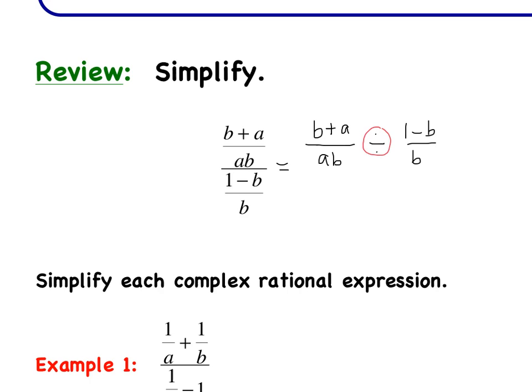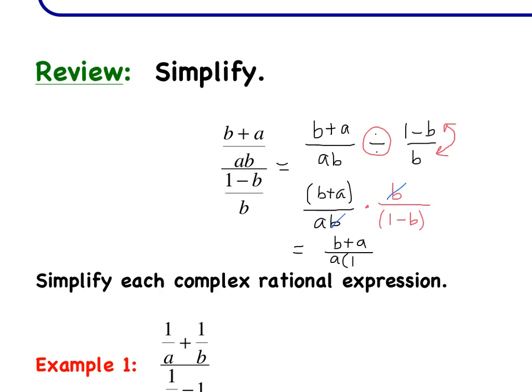From here, we took this division by a fraction and turned it into multiplying by the reciprocal. At the same time, we can factor if we can. So (B plus A) stays (B plus A) over A times B, and now we're changing it to multiplying by the reciprocal, which is B over (1 minus B). Now we can go through and cancel any factors. We've got a B in our numerator and a B in our denominator, so those B's cancel. We clean up our answer: (B plus A) over A times (1 minus B).